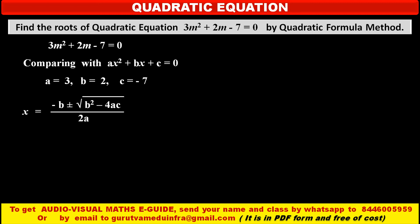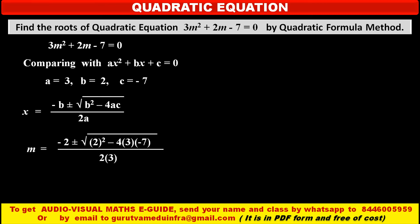Now, we have to apply the quadratic formula: x is equal to minus b plus or minus square root of b squared minus 4ac, upon 2a. In this formula we have to substitute the values of a, b, and c as above. So we get: m is equal to minus 2 plus or minus under square root of b squared minus 4ac.